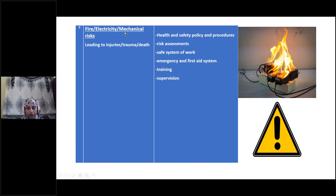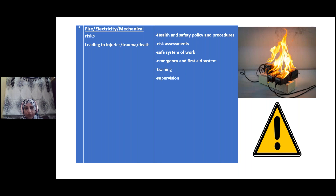This last part is more related to safety issues. Fire, electricity, and mechanical risks can also result in injuries or may lead to death. That is why we need policy and procedures for health and safety in each institution. Regular risk assessment should be requested, and you should keep a safe system of work, have a system for emergency and first aid, do proper training for the workers, and proper supervision is also required.